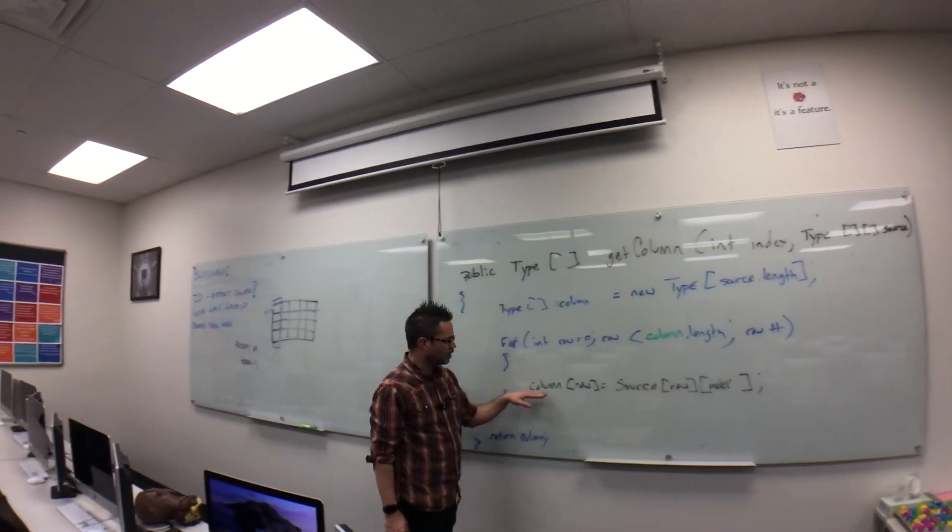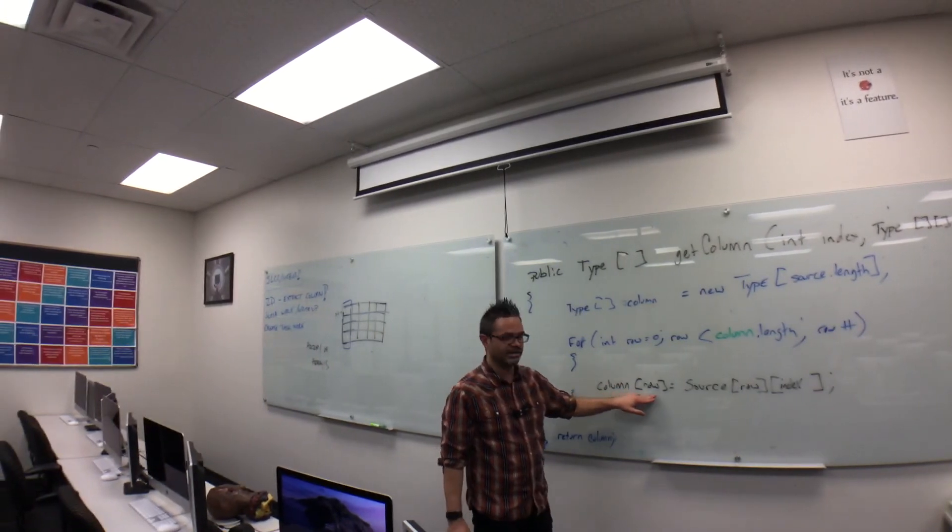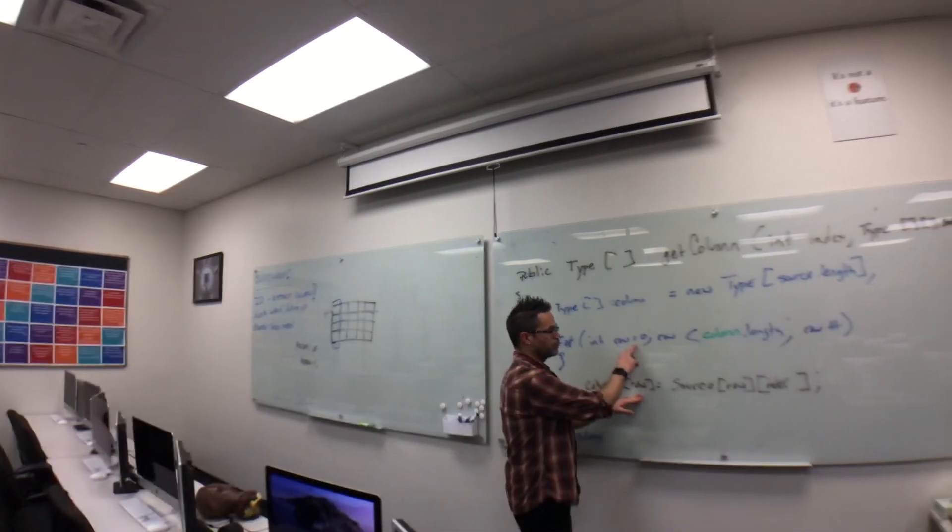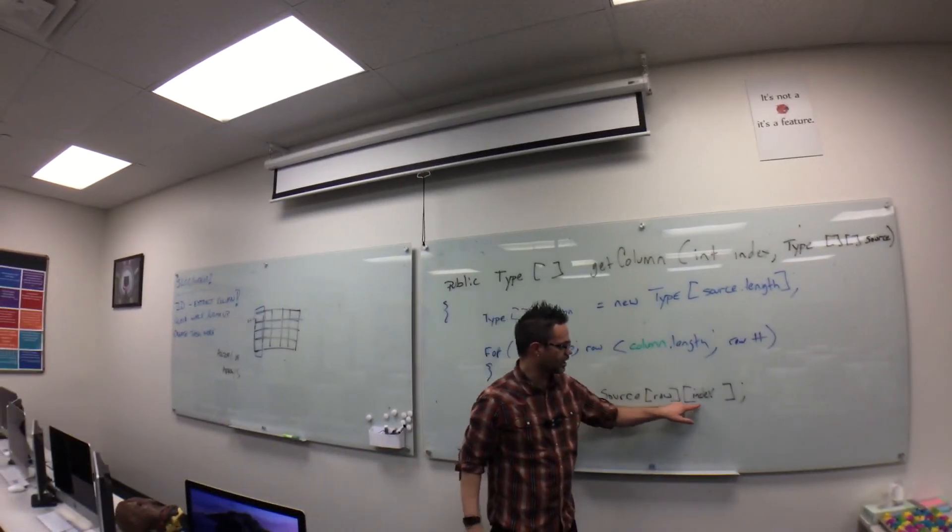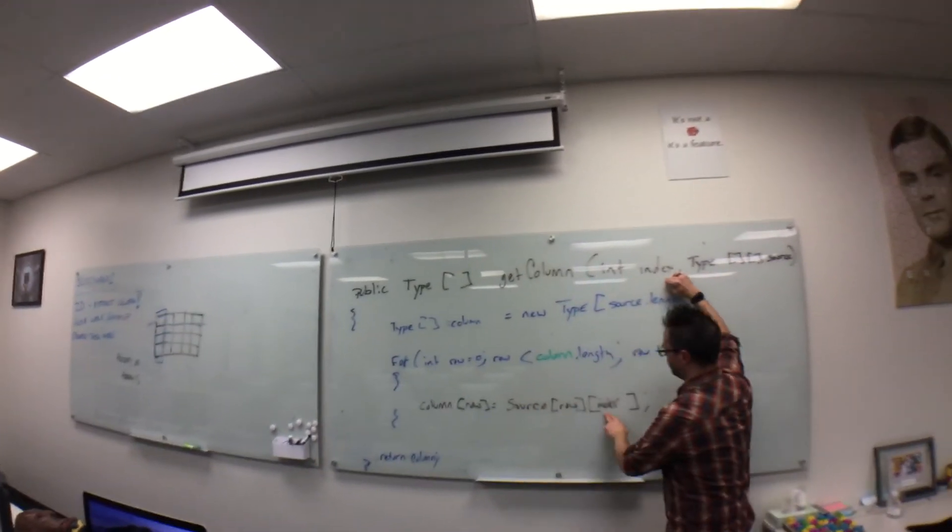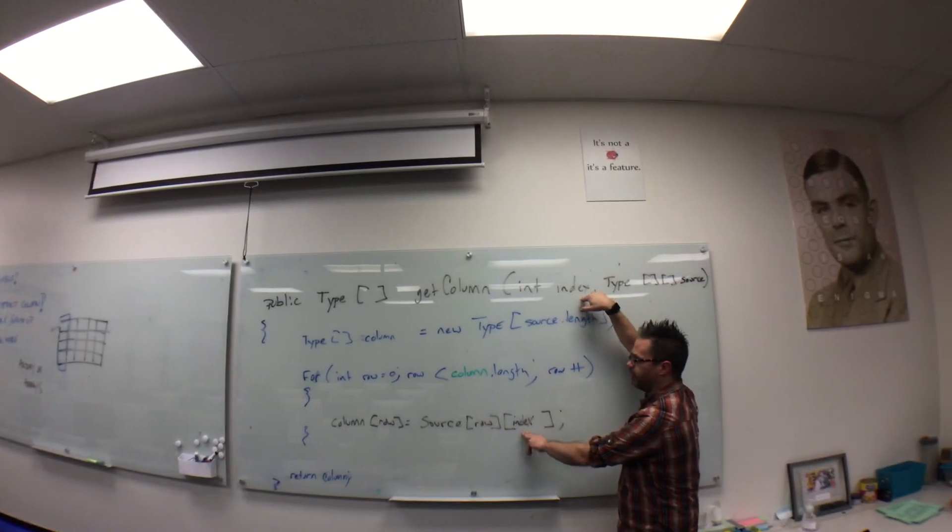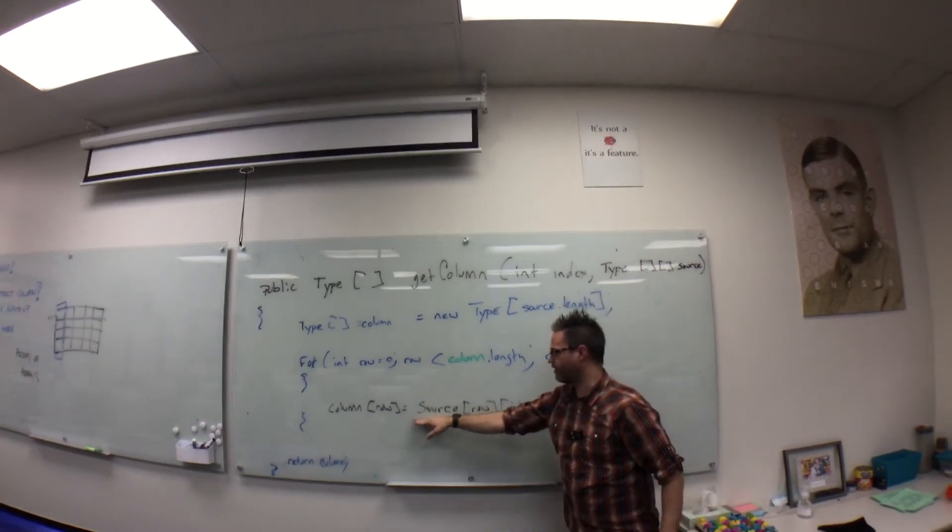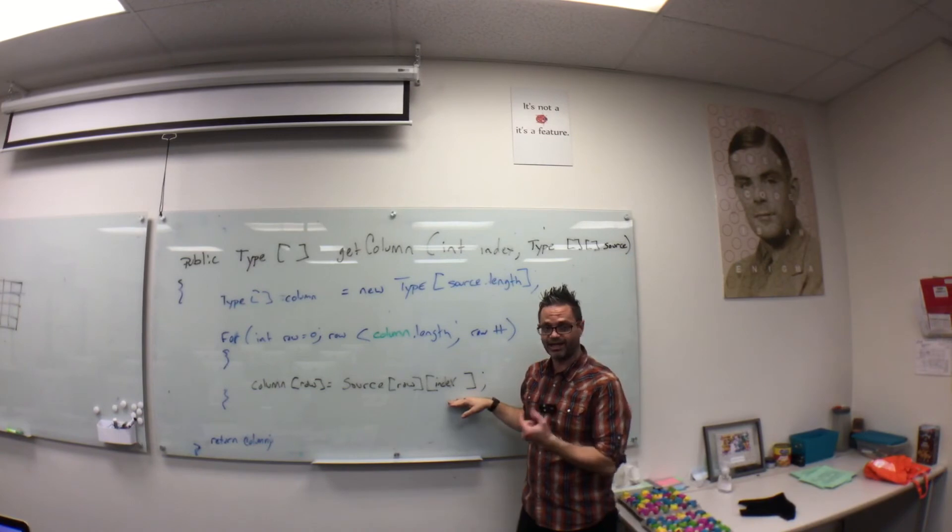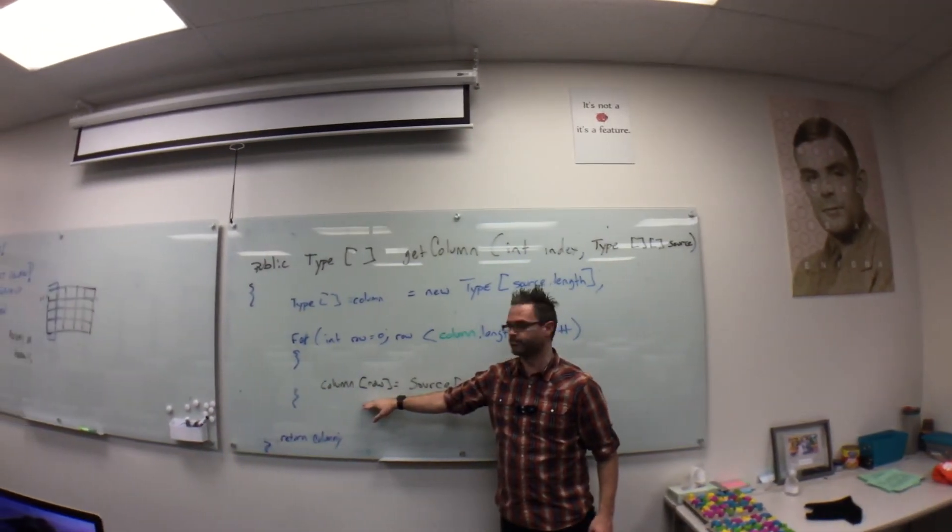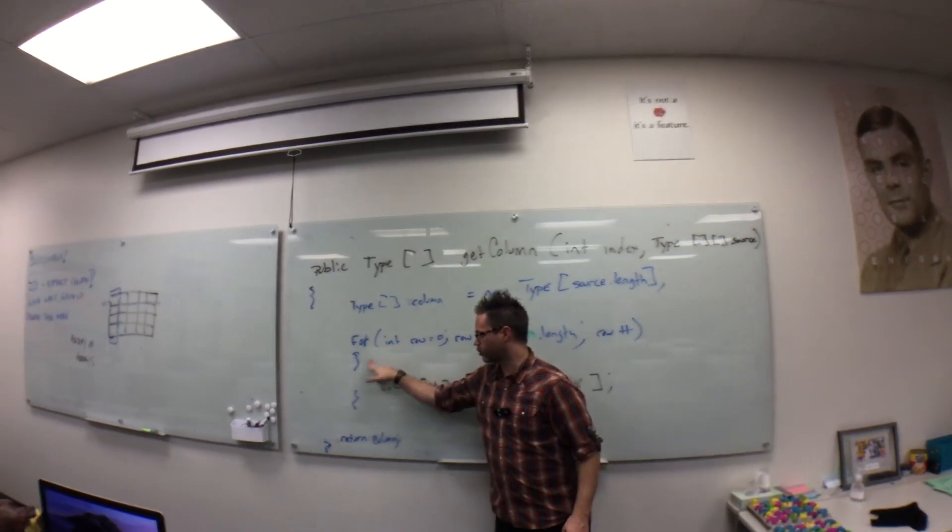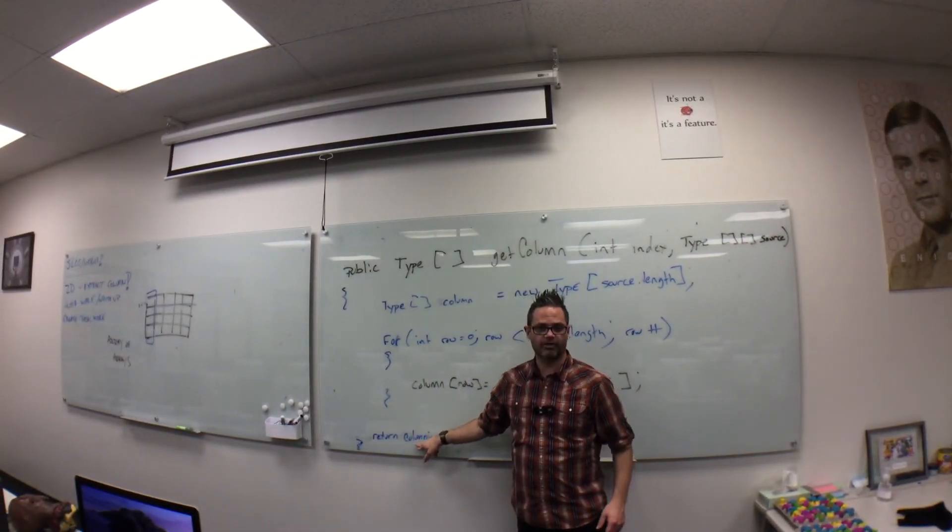Inside there, column sub row, that index variable we're working with, and that's why we're using the regular for loop, equals source sub row sub index, matching that column to the parameter supplied above. That will go through and extract out every value inside the original 2D array at that index for each column and store it in that new array we're creating. Once that iteration is done, we return the column.